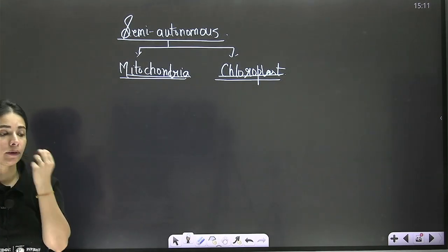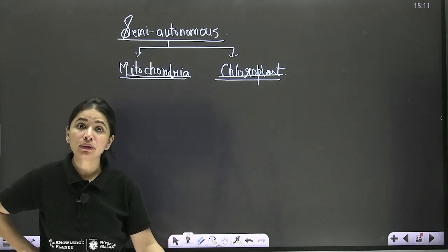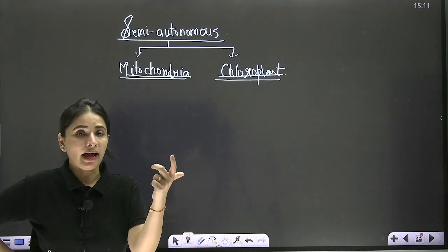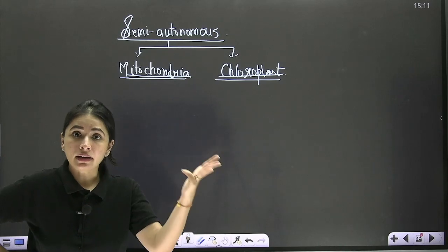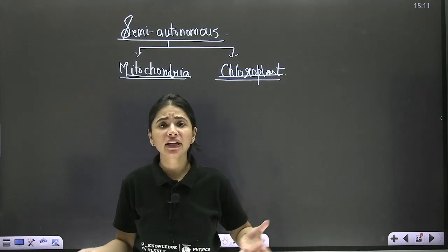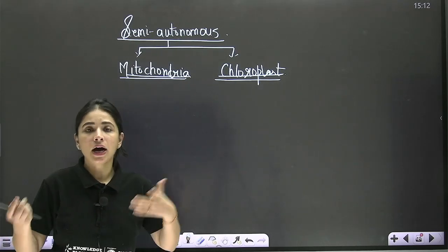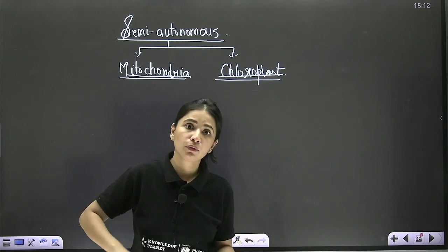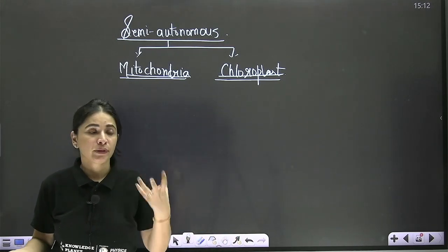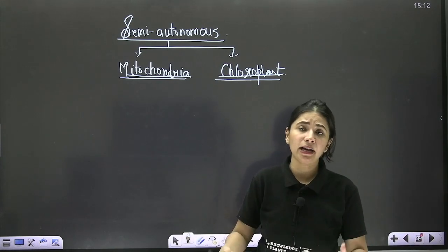These two cell organelles can have an independent existence even outside the cell because they have their own DNA, their own protein synthesizing machinery, their own ATP synthesizing machinery, and they can reproduce by fission. In contrast, endomembrane organelles like ER, Golgi, and lysosomes are all intercoordinated and do not have their own ATP or protein synthesizing machinery — they need the help of the cell and nucleus.